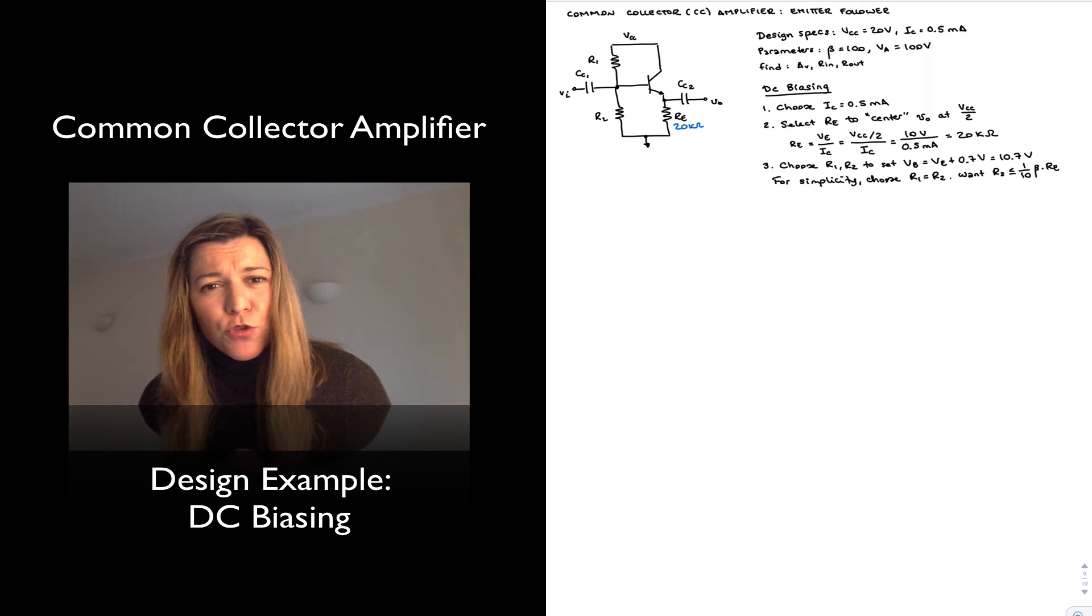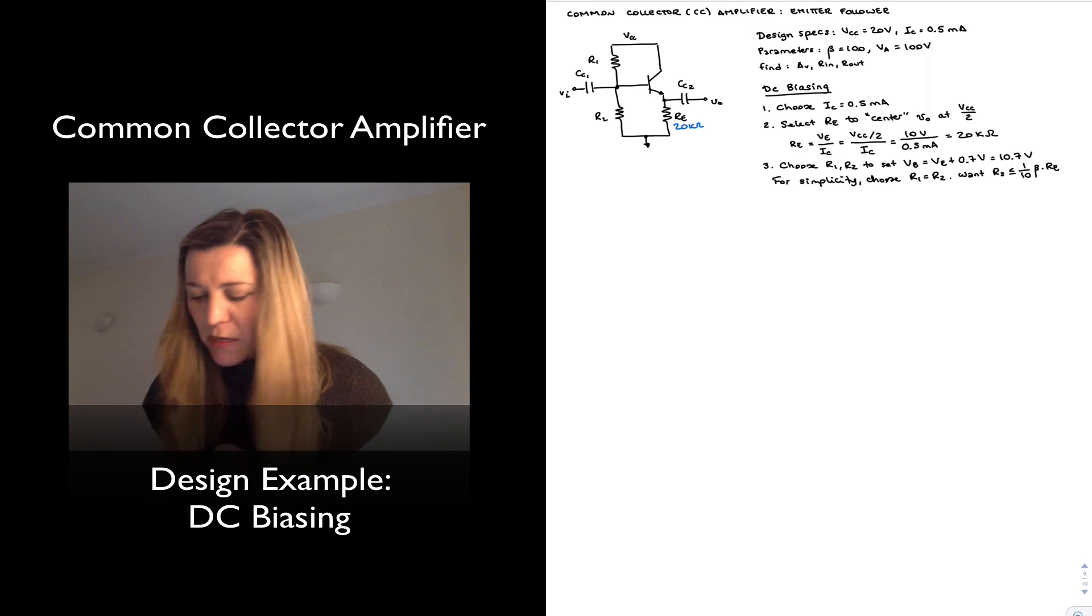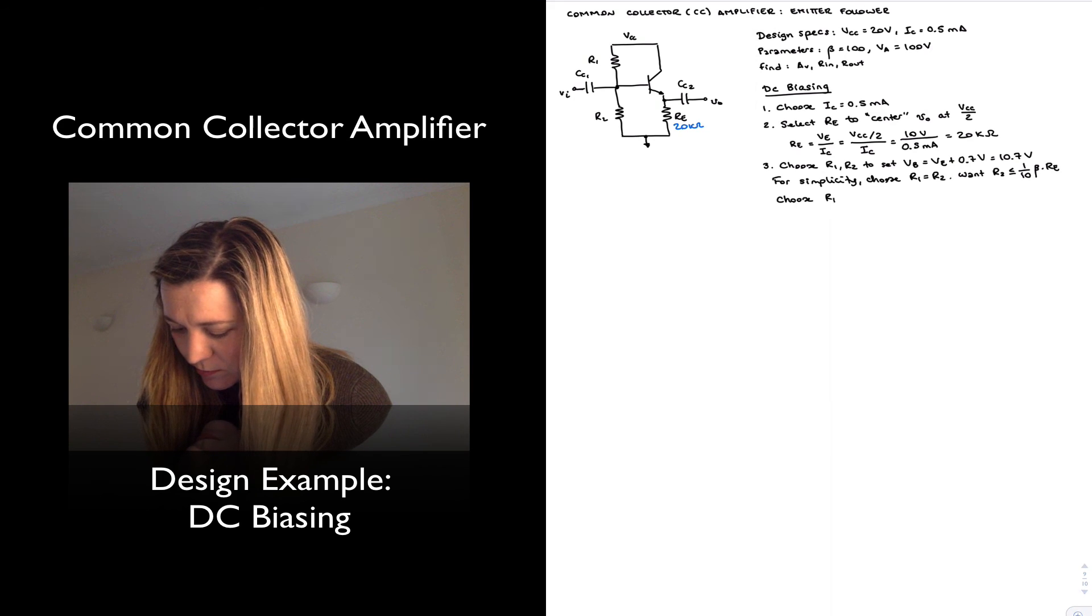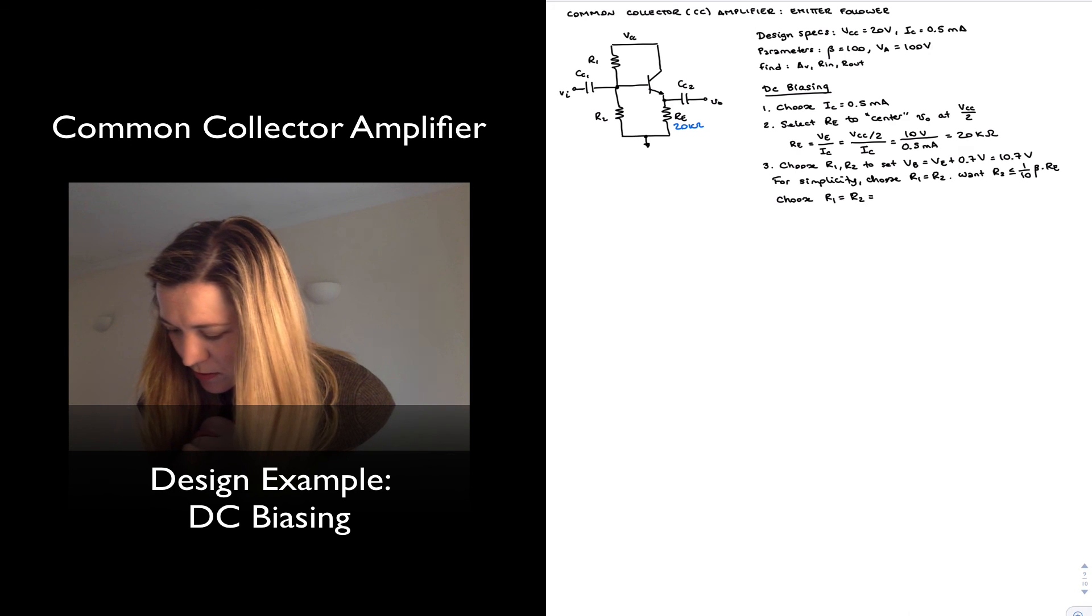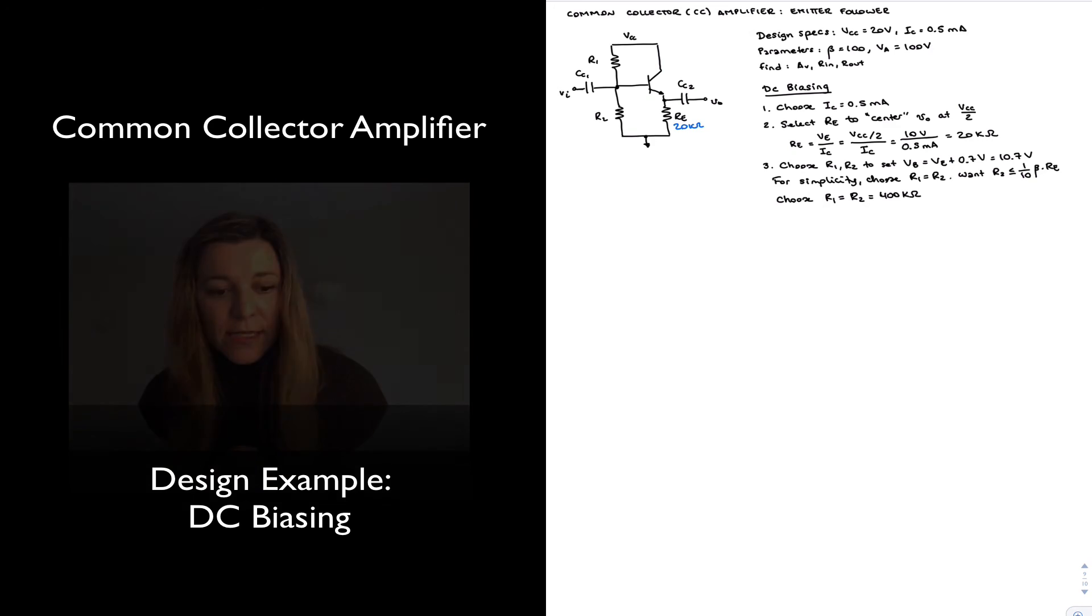In all reality, I'm going to choose 400 kilo-ohms because that will give me a parallel combination of R1 and R2 of 200 kilo-ohms. So I'll lose some in terms of my base voltage stability, but I will gain in my input resistance. So I'm going to choose R1 equal to R2 equal to 400 kilo-ohms, and that's it.